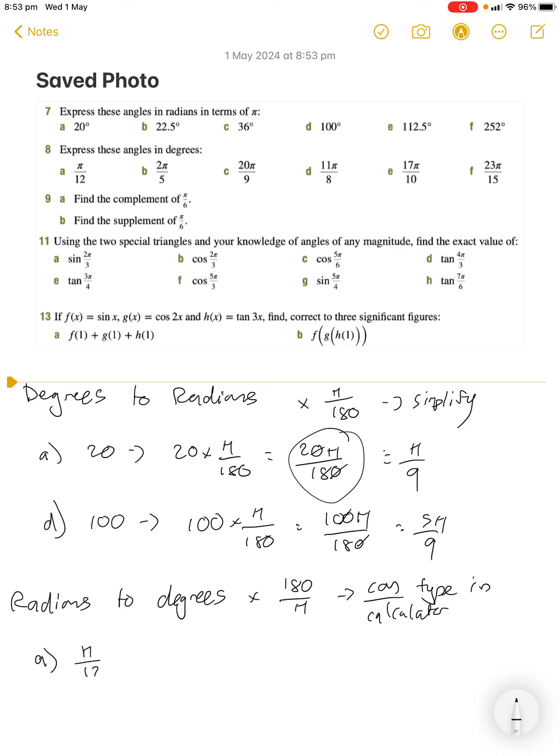π over 12 into degrees, we're going to multiply that by 180 over π. The πs are going to cancel, which is great news. And then we've got 180 divided by 12, which we can do as 90 over 6.